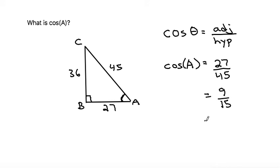So then we could divide by 3 again. 9 divided by 3 is 3. And 15 divided by 3 is 5. So our ratio would end up being that the cosine of A is equal to 3 over 5.